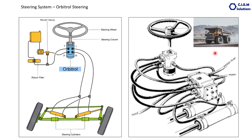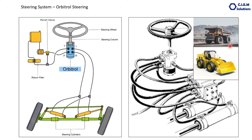This orbital steering system is used on higher capacity machines like mining trucks, wheel loaders, and other construction and mining segment machines. The main components are the orbital valve, the main steering pump, some valves in between, and the steering cylinders.